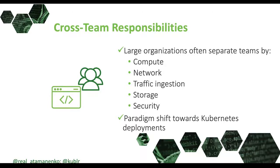In large organizations, there is a separation of responsibilities between different teams. Usually, there is a team responsible for compute instances, another team responsible for network and traffic ingestion, a team responsible for storage, and a team responsible for security. Once you move everything to Kubernetes, these teams must communicate effectively with each other in order to support production. It may mean that you need to change how your teams interact with each other so that you can effectively support your production.